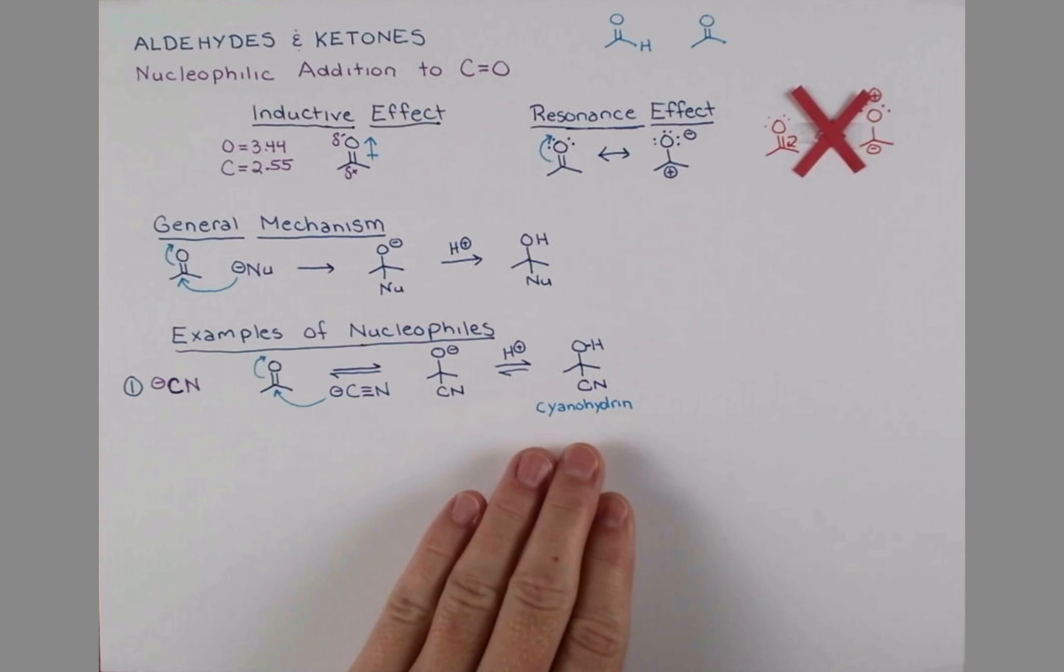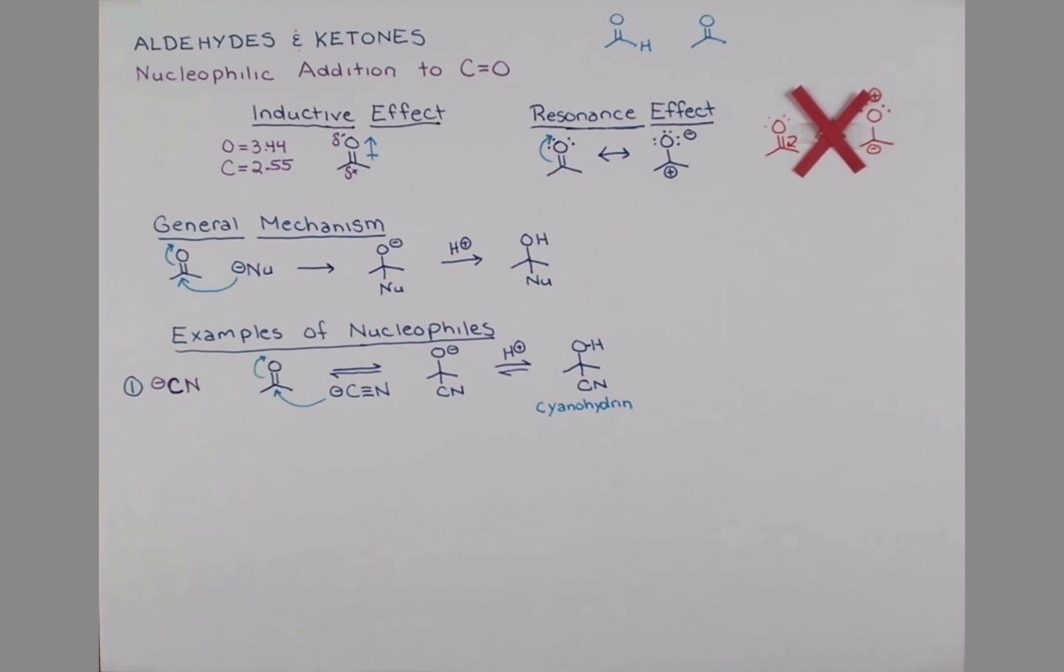This reaction is reversible. And if we treat our cyanohydrin with a little bit of base and warm it up, we can deprotonate the hydrogen atom, take the electrons from the OH bond and reform the carbonyl, and kick out cyanide. This gives us back our ketone and CN-. The reason this reverses so readily is because cyanide is a good leaving group.